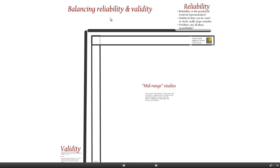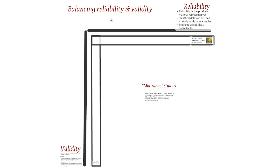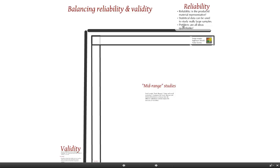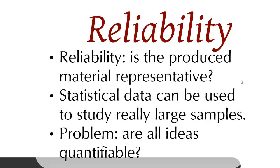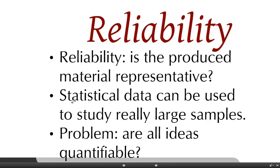This is intertwined with the balancing of reliability and validity. Starting with reliability: this is really concerning how rigorous and robust the scientific method you're applying really is, but also whether the produced material is representative of what you're studying. To do that you have to have a representative sample, which is often a very large sample. So what we do is use quantitative methods — statistical methods, statistical data — because this type of data can be used to study really large samples.